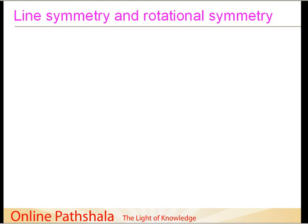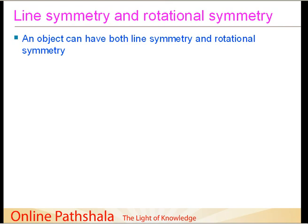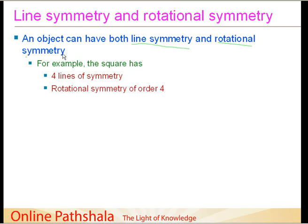Welcome back to the discussion on symmetry. In this session, we are going to look at whether there are figures or objects which exhibit both line symmetry as well as rotational symmetry. We will be building up on the previous example of the square that we took in our earlier sessions. It is definitely possible for an object to have both line symmetry as well as rotational symmetry.